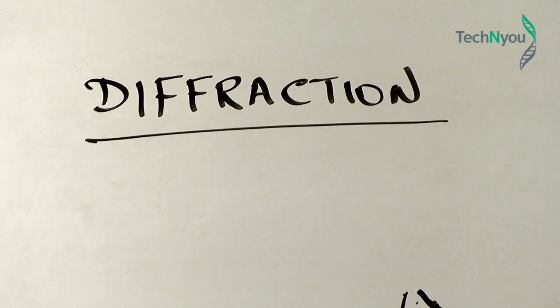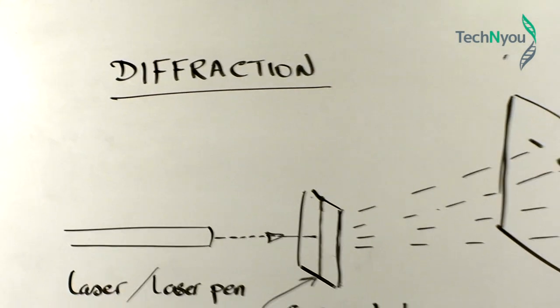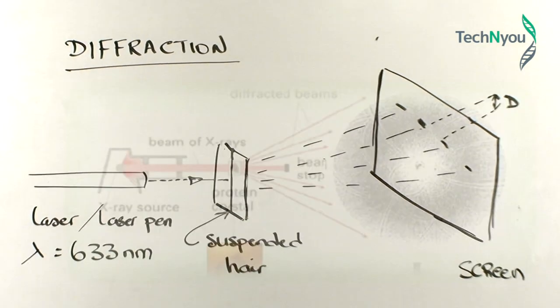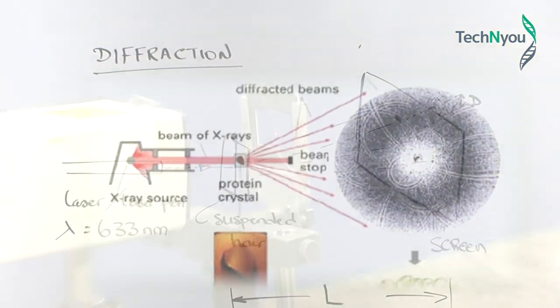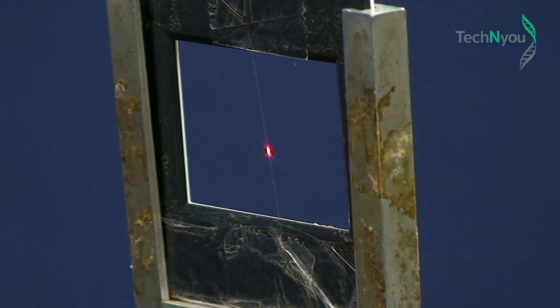This experiment will demonstrate the diffraction technique, typically used with an X-ray beam to measure tiny objects down to the nanoscale. We use a simple laser beam to measure the diameter of a human hair.